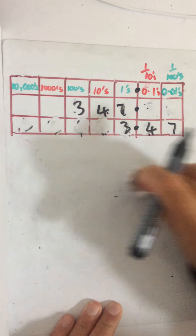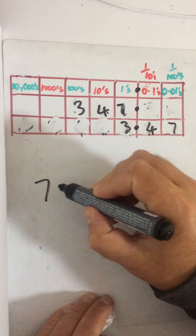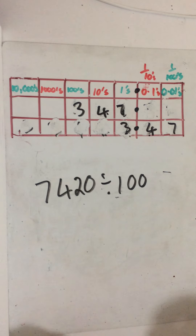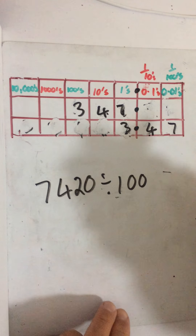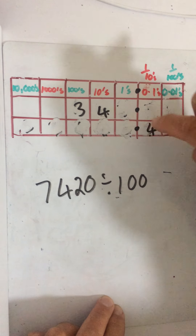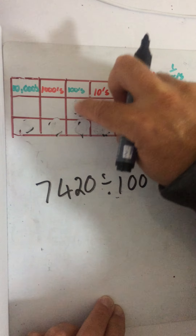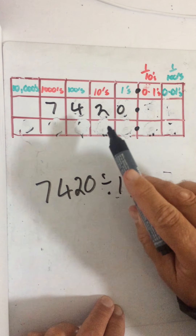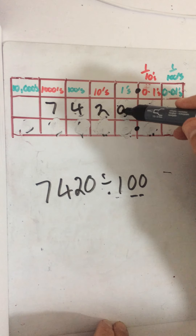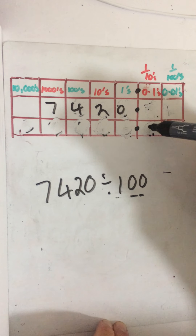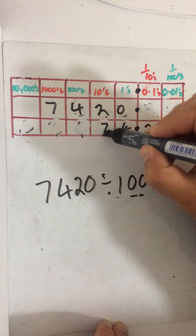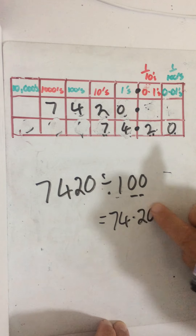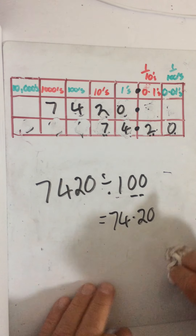7,420 divided by a hundred. I'm dividing by a hundred, so I'm going to move the numbers two places to the right — one, two. Then the rest slots in, and I get 74.20. We don't really need that trailing zero, but we'll leave it in to avoid confusion.